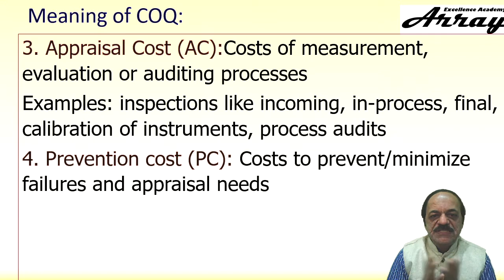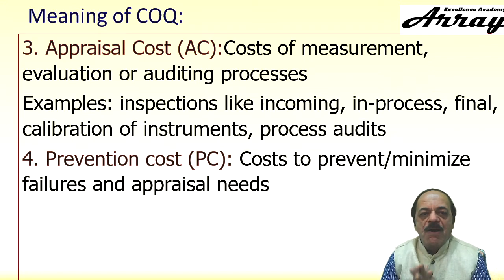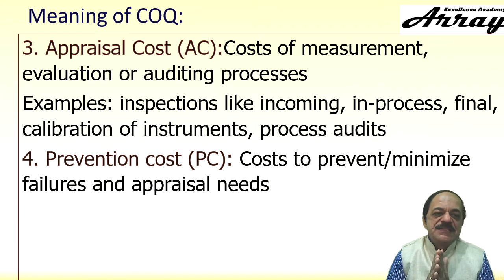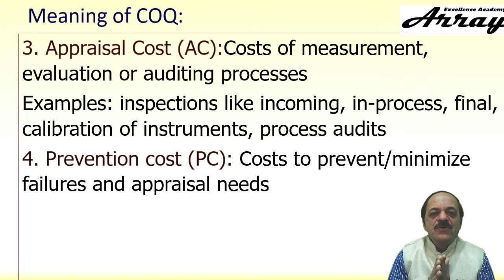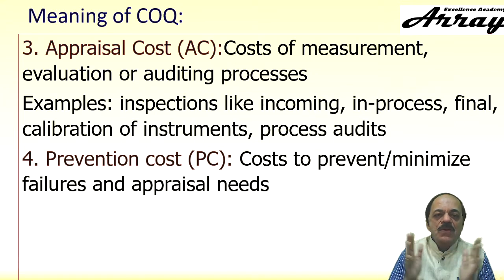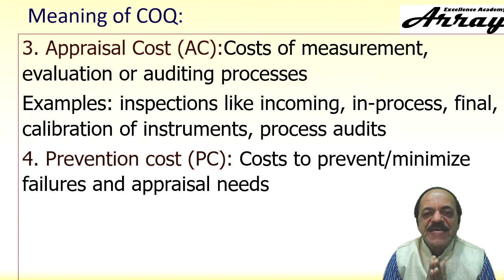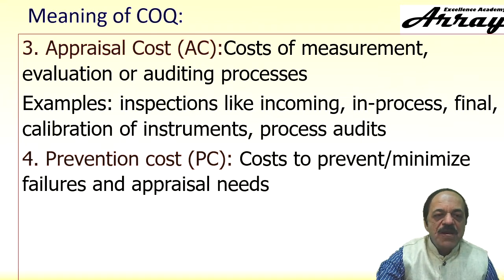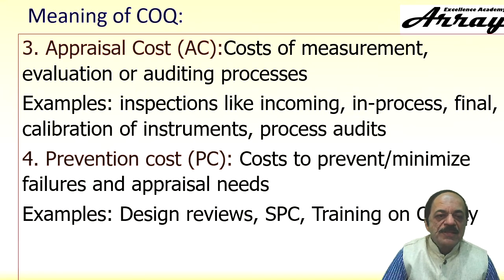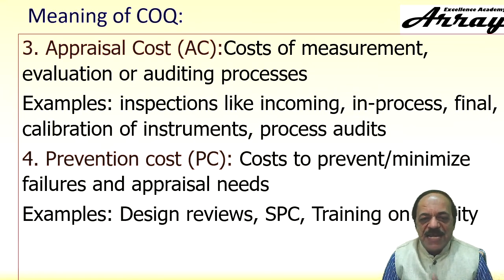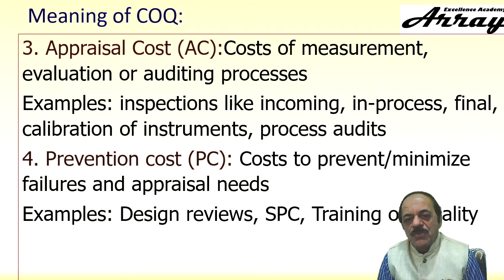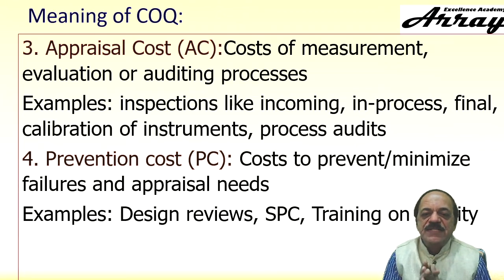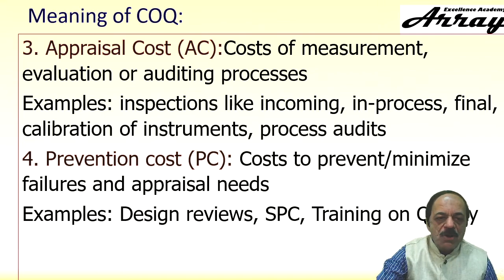Prevention cost is defined as the cost to prevent or minimize failures and appraisal needs. If prevention cost is effective, there is no need for appraisal, no chance of internal failure, and no problem of external failures — this is the best way. The best way for this to happen is at the design review stage. Statistical process control is one of the tools. Training on quality also comes under prevention cost, which is proactive.